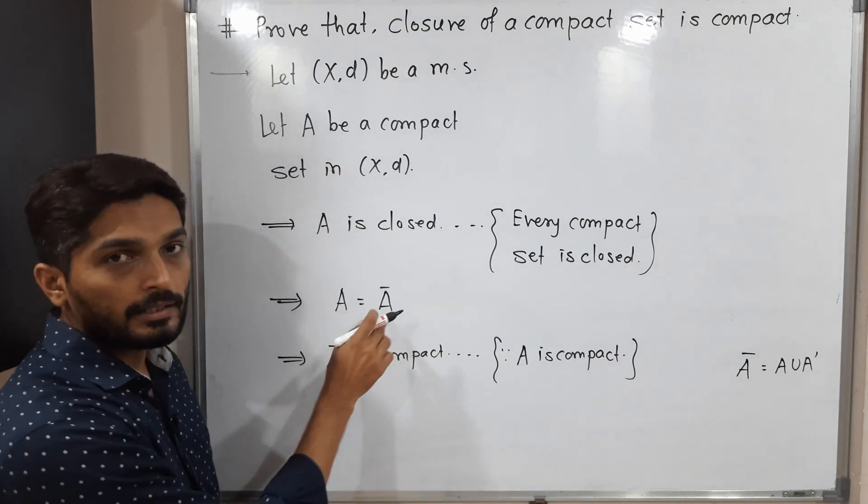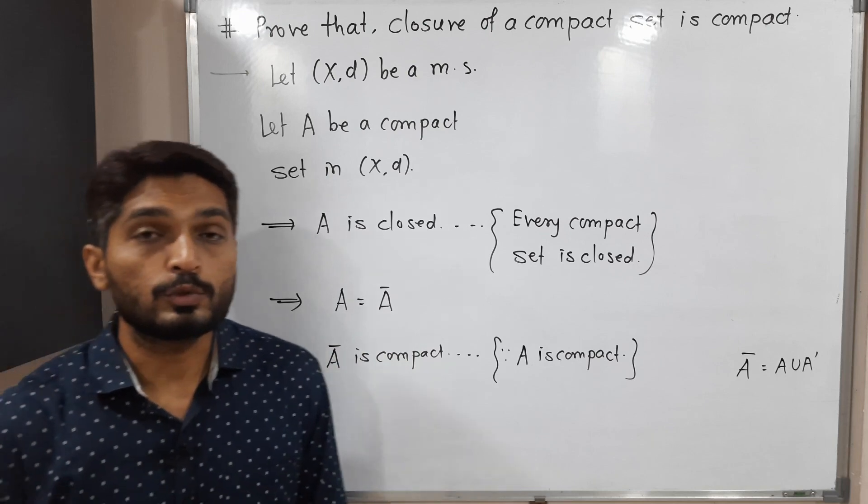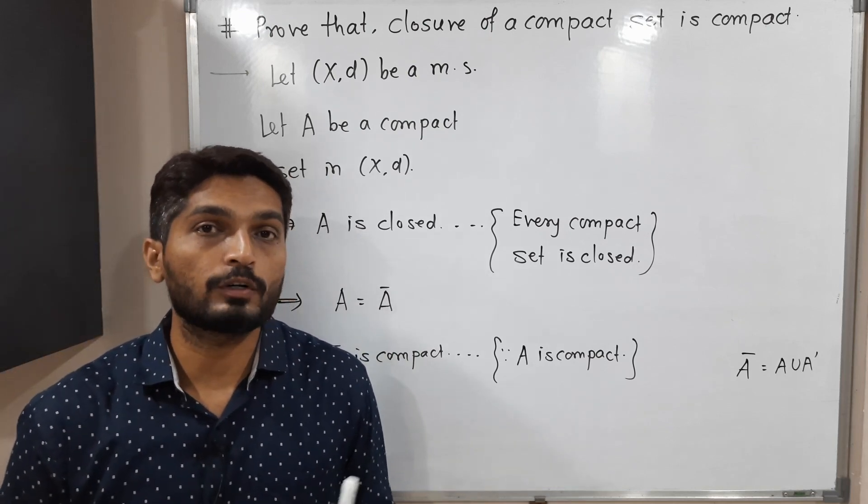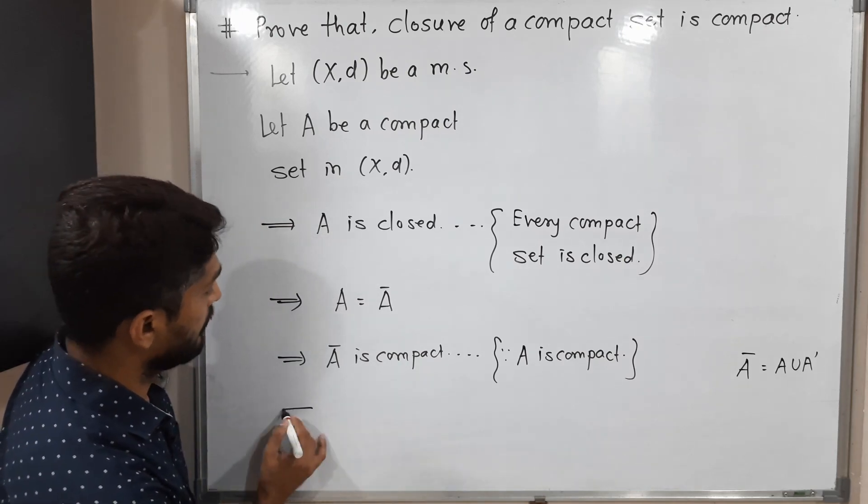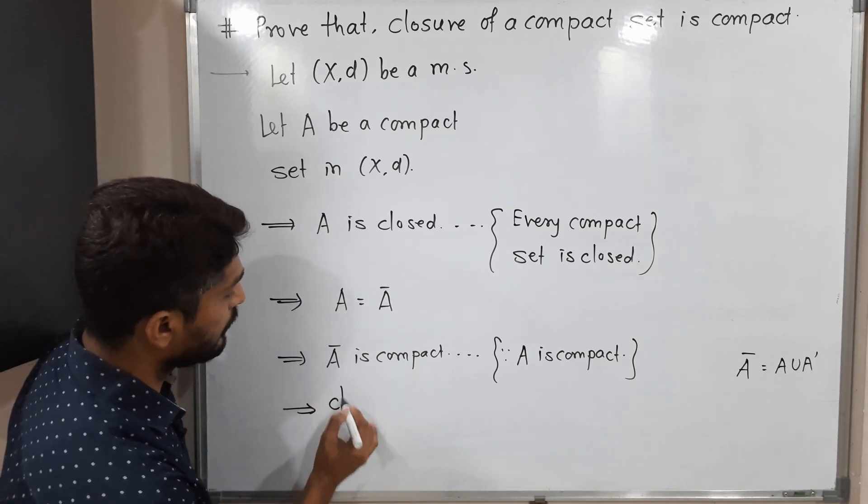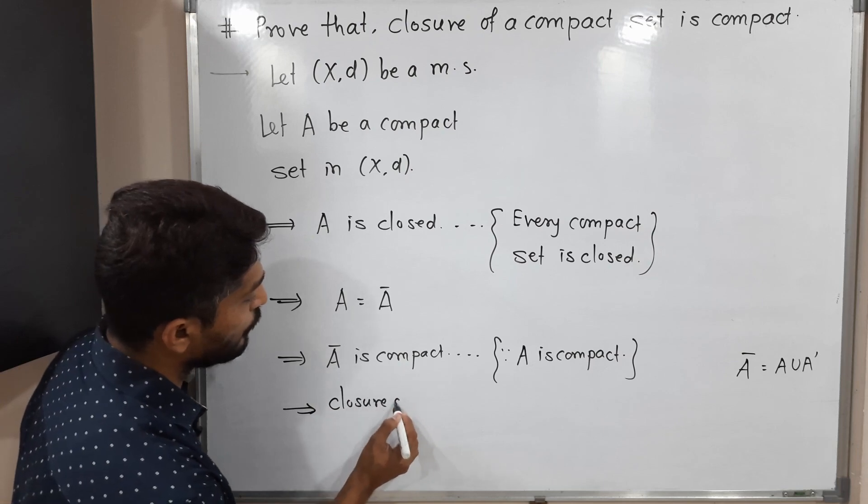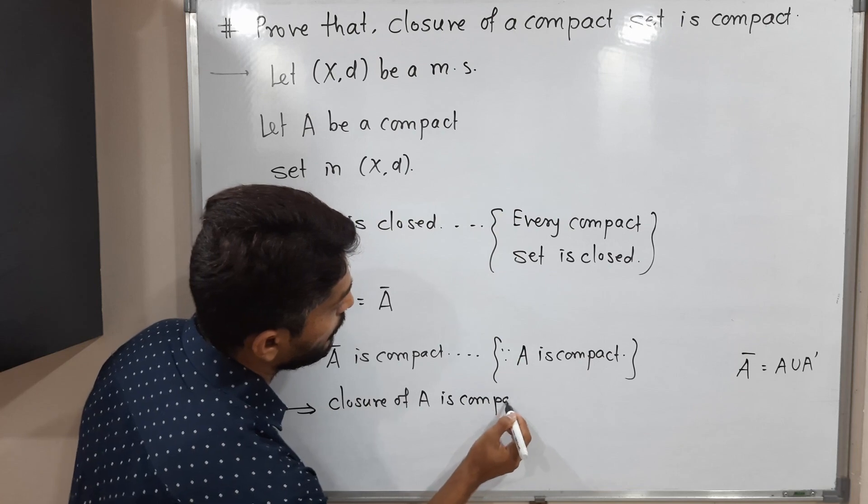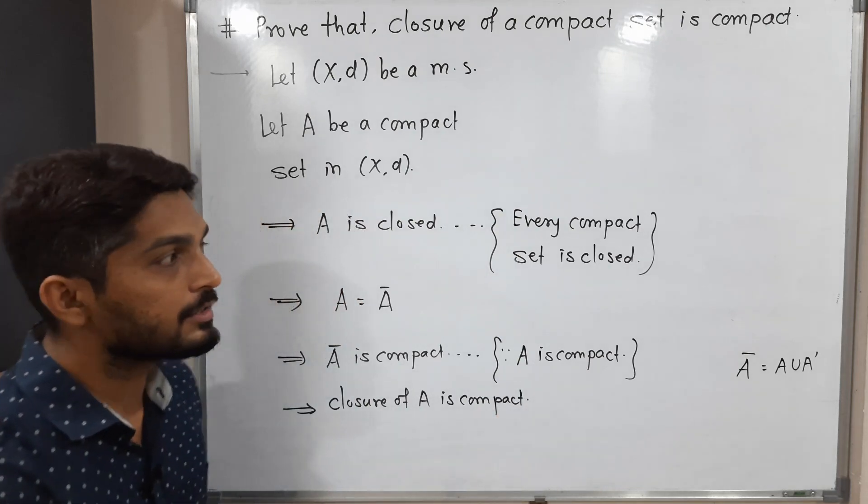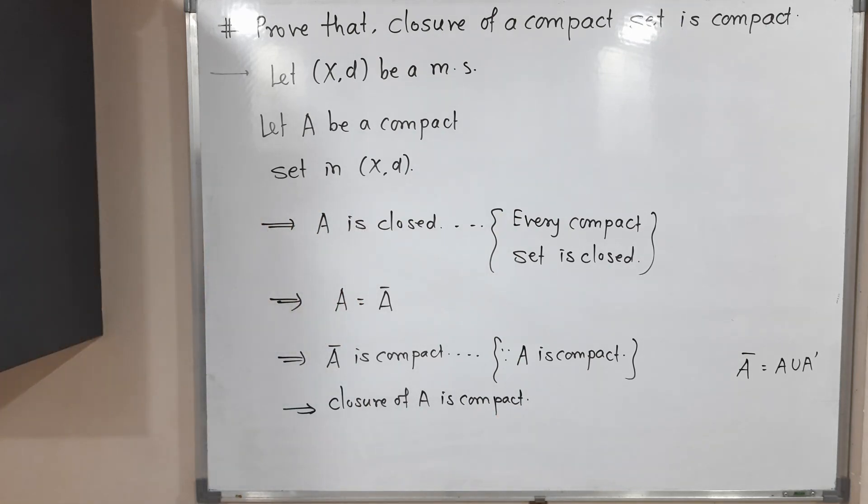In this way we proved that closure of a compact set is compact. Let me mention here: A bar, which means closure of A, is compact. So we proved that this statement is true. Make a screenshot of it. Thank you, bye bye.